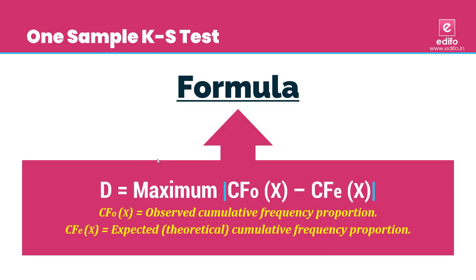The formula for the KS test: the statistic value is called D, equal to the maximum of |CFO(x) − CFE(x)|, where CFO is the observed cumulative frequency proportion and CFE is the expected cumulative frequency proportion. The main difference from the chi-square test is that here we consider the cumulative frequency proportion rather than exact observed and expected values.